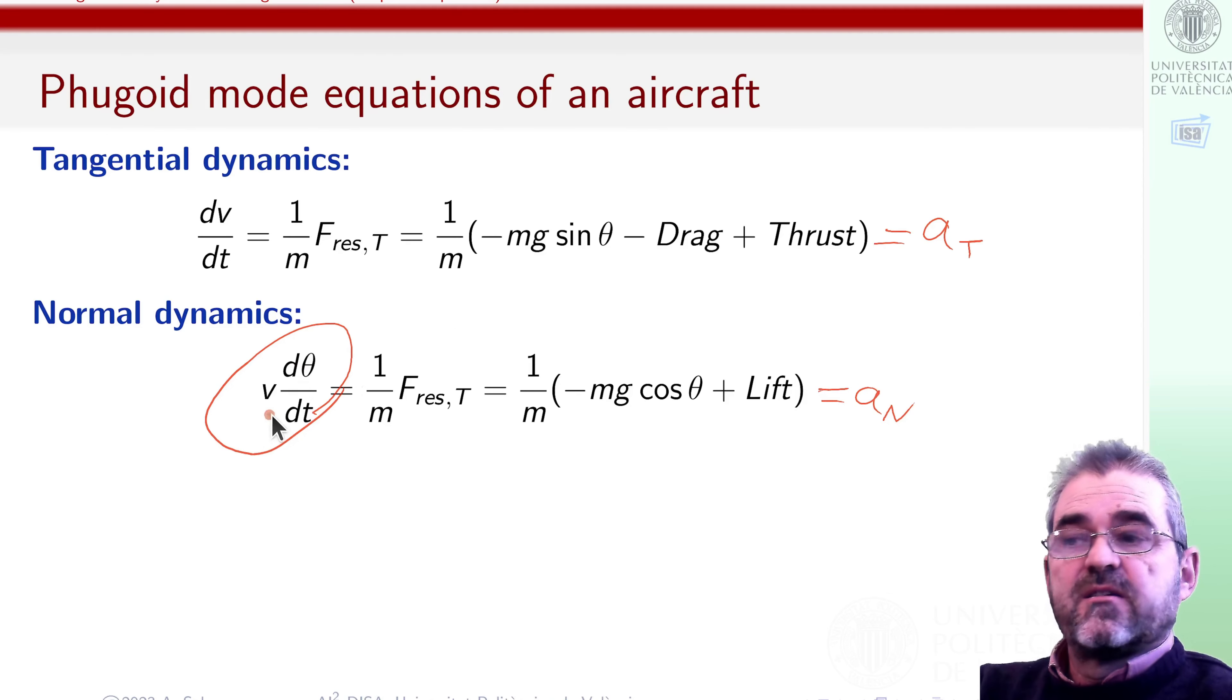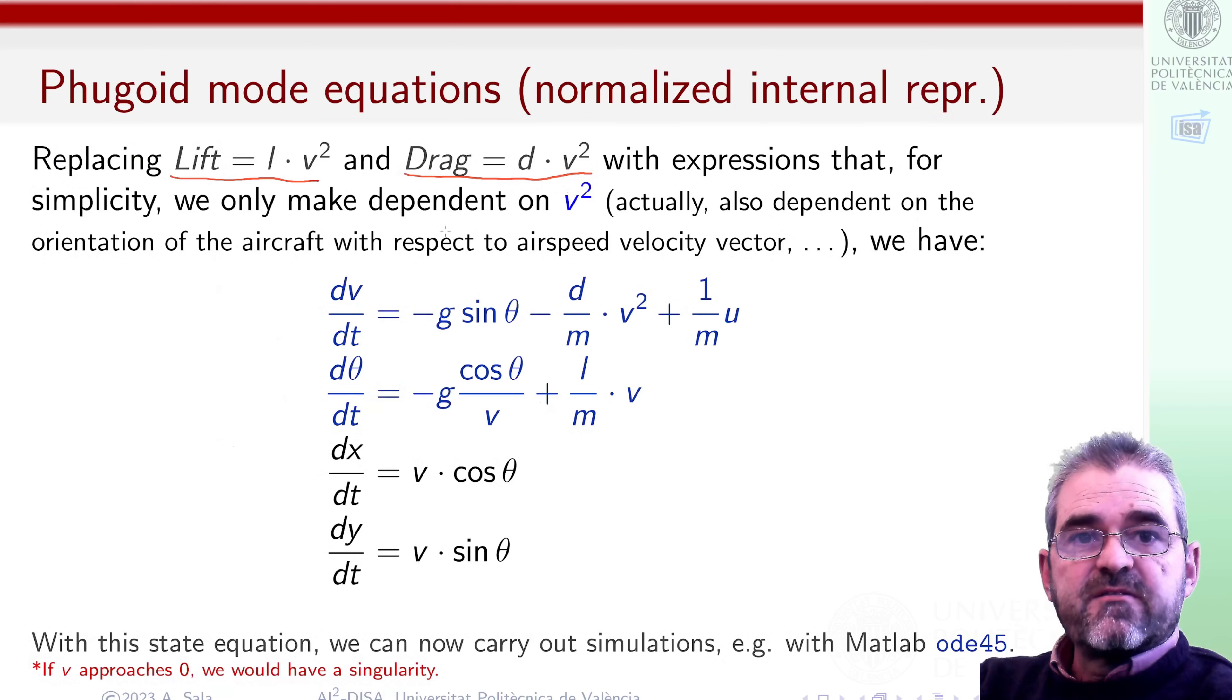So dividing this equation by the speed, and replacing lift and drag by some expressions that multiply the square of the airspeed by some coefficient, which is constant for simplicity, but of course in more complex models those lift and drag coefficients depend on many things about the state of the aircraft. But for a fixed incidence angle we are assuming, we'll keep these coefficients as constant.